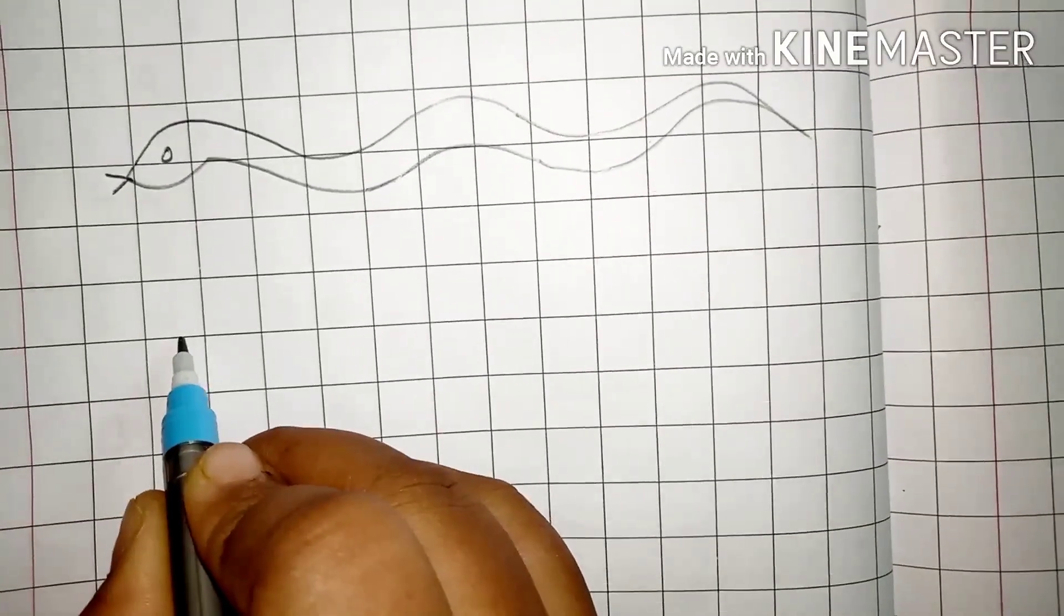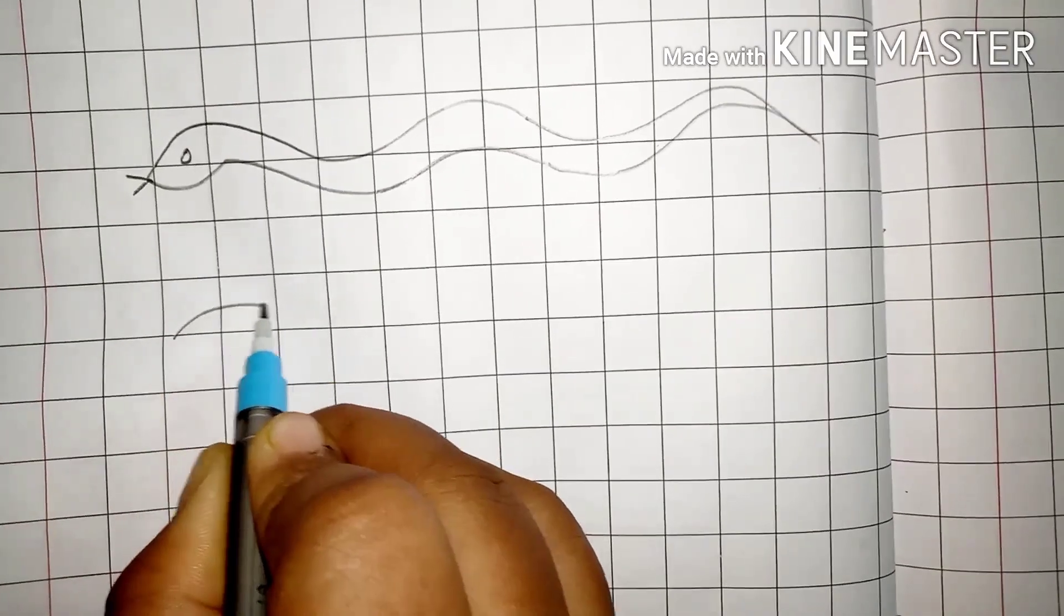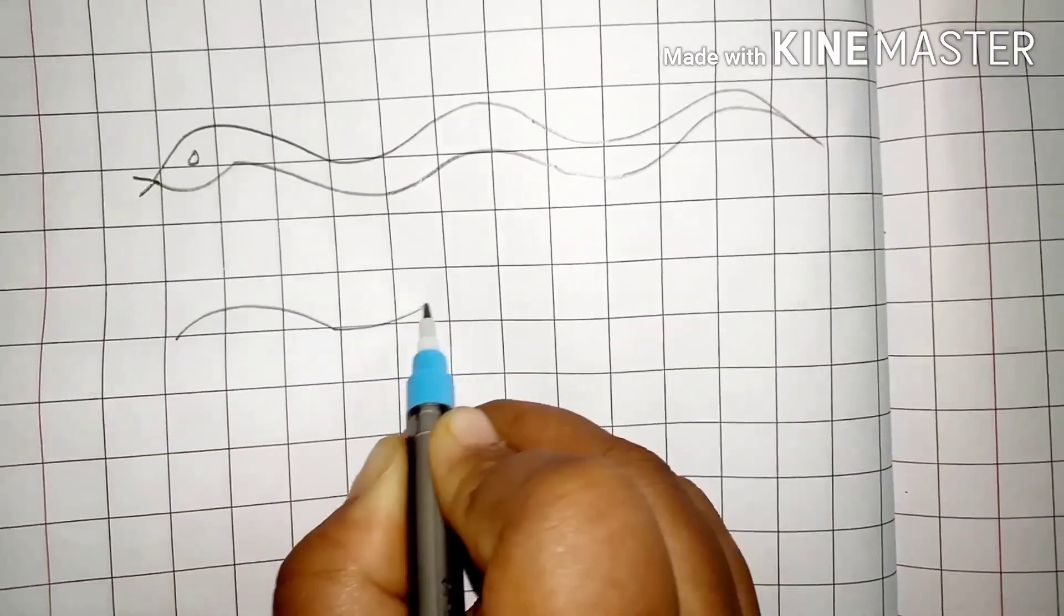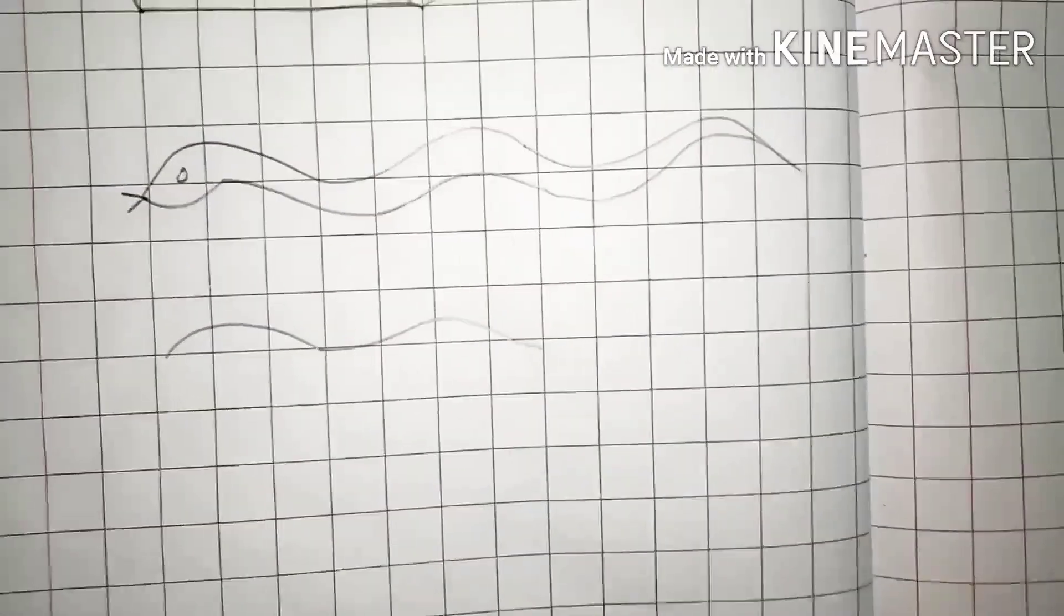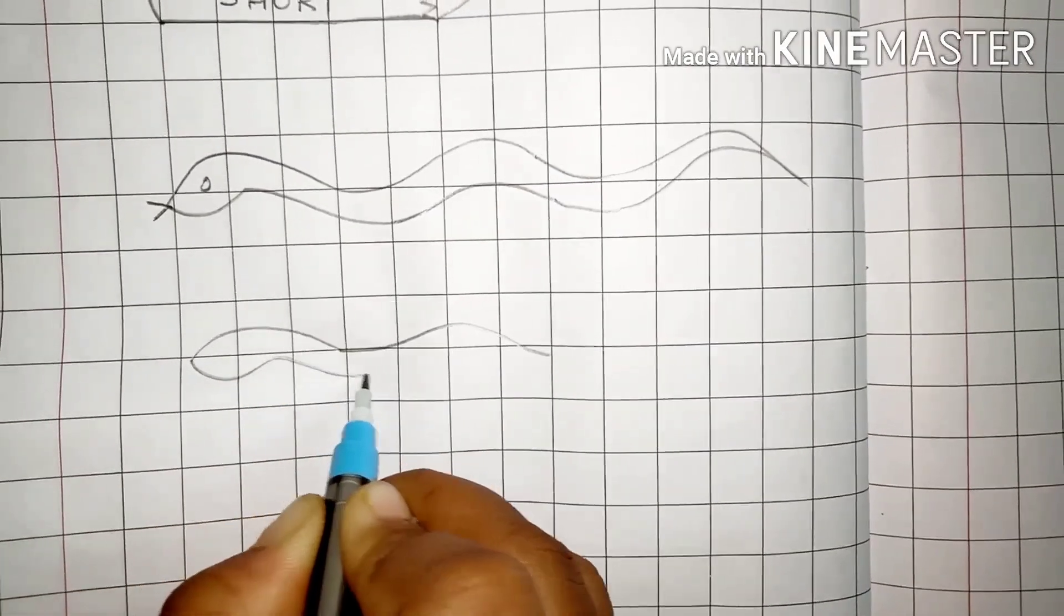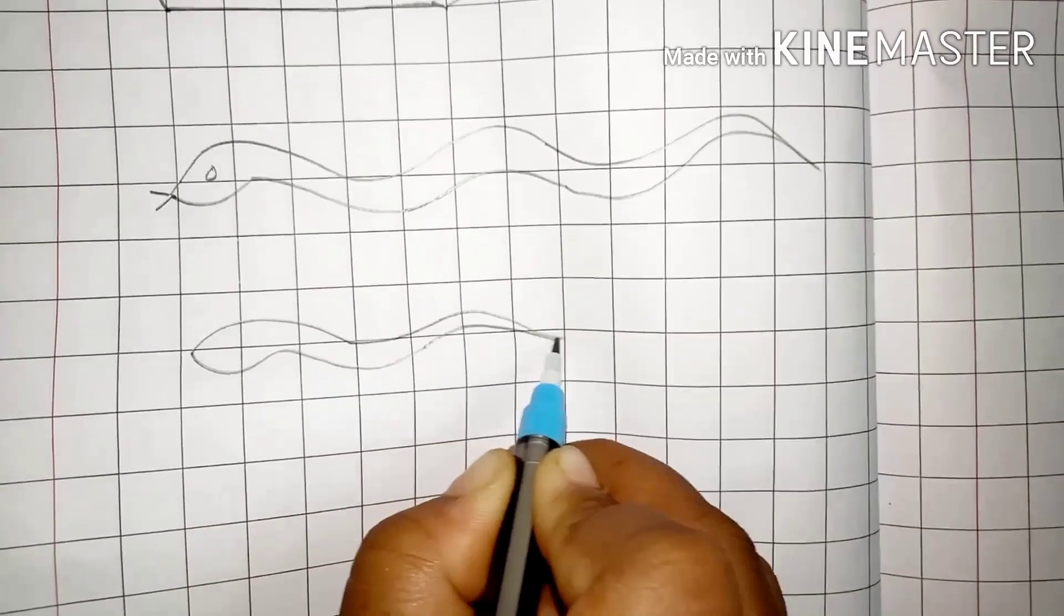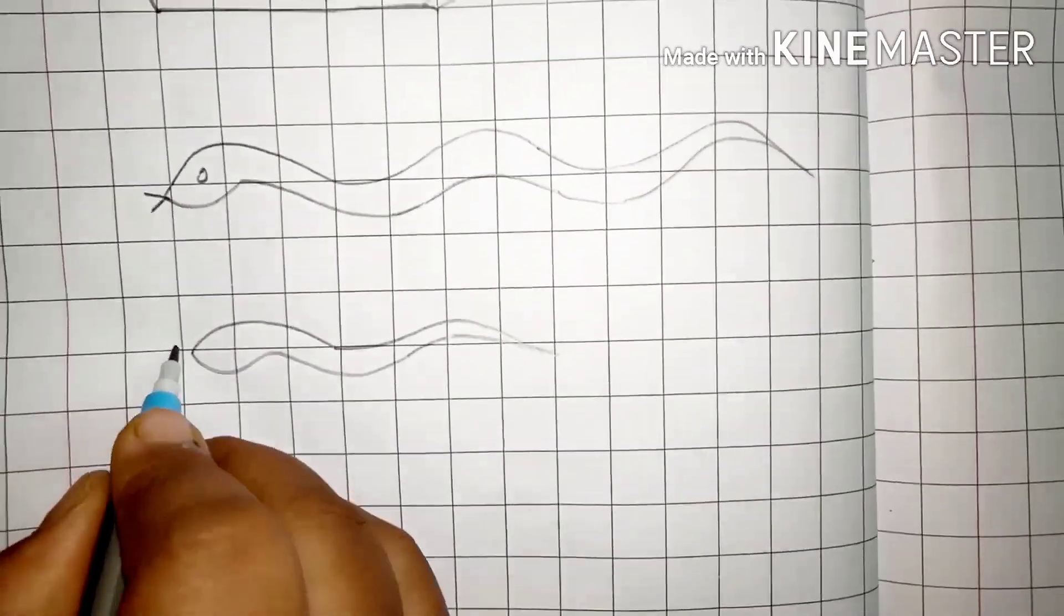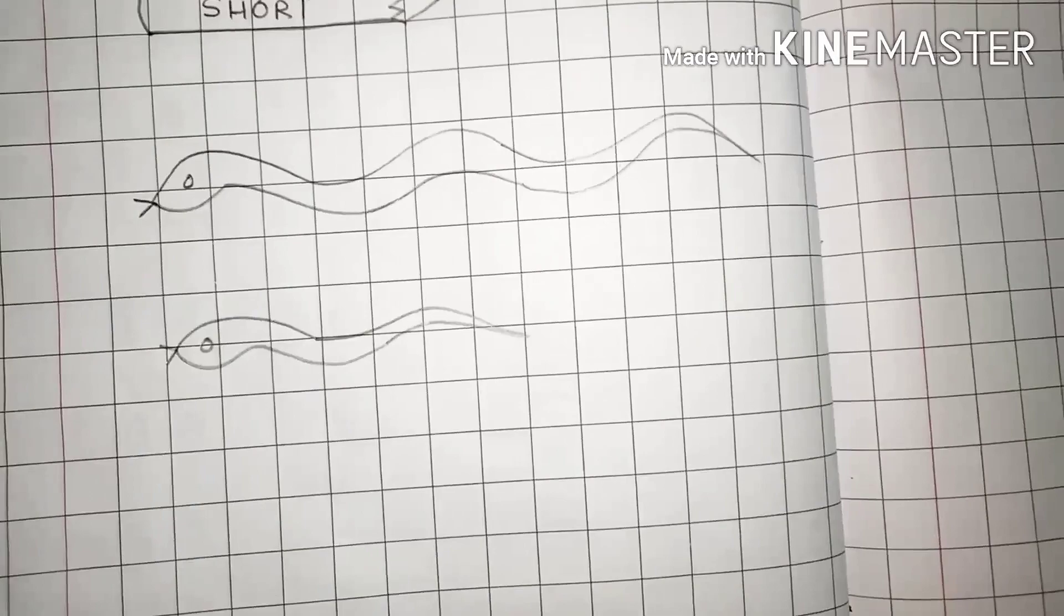Again, repeat the same process. But, we will draw a short snake. Like this. The same way.